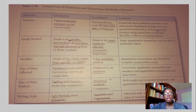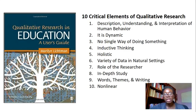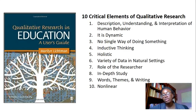The type of data analysis involves coding and themes, and some people use computers. The writing style is less formal and more personal. There are 10 critical elements of qualitative research. The first is description, understanding, and interpretation of human behavior — qualitative research is really steeped in trying to describe and understand human behavior. They're not just concerned with numbers but want to know what's actually going on. It's very dynamic, and there is no single way of doing something, so you can go about your research in several different ways and that's still acceptable.